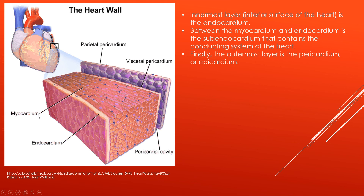The first layer is the endocardium. This is a single sheet of cells that lines the ventricle — the layer in contact with all the blood inside that chamber. This is the innermost layer. Right here is the myocardium, which is all the muscle that composes the heart. This is the biggest layer.